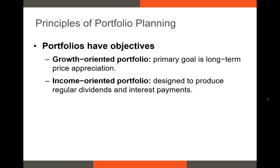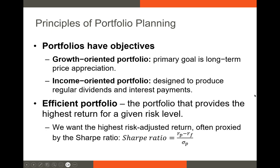Pretty much every professionally managed portfolio is going to have some objective. Some objectives we see in this industry are growth oriented — if you look at a prospectus for a particular mutual fund, their objective might be something like long-term price appreciation, investing in stocks most likely to have very high returns in the future. Other portfolios, particularly those that invest in equity or bonds, might have income-oriented approaches, focusing on stocks or bonds that pay out high dividends or coupon payments. Regardless of the objective, generally we want to develop portfolios that are efficient — meaning our portfolio has the highest risk-adjusted return.